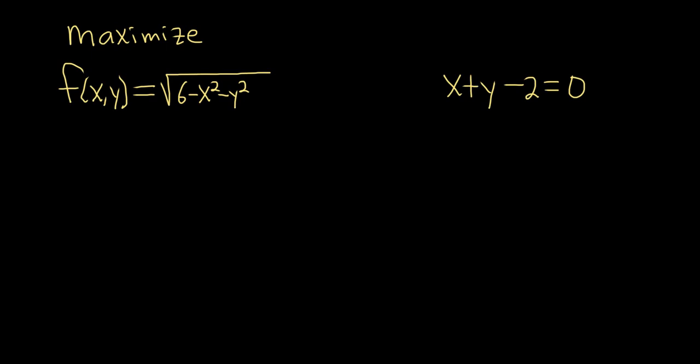In this problem, we're going to maximize this function subject to this constraint over here, x plus y minus 2 equals 0.